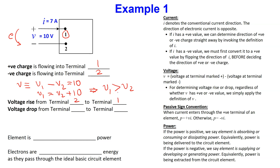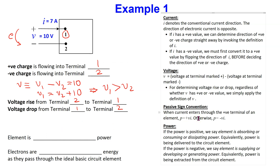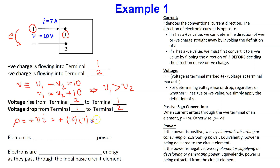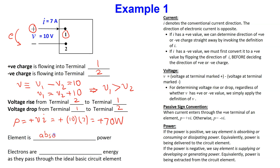To determine the power, we invoke the passive sign convention. This states that when the current enters through the positive terminal of an element, power is plus VI; otherwise, power is minus VI. We can see that the conventional current is entering the terminal marked plus, therefore power is plus VI. Substituting the values, we get plus 70 watts. Since the power is positive, the element is absorbing power.